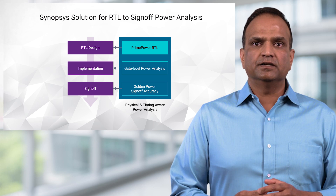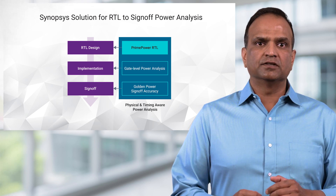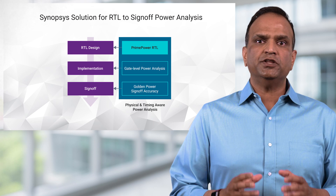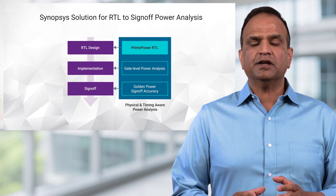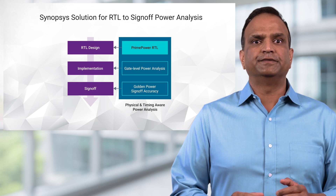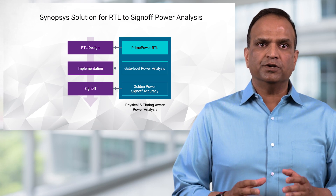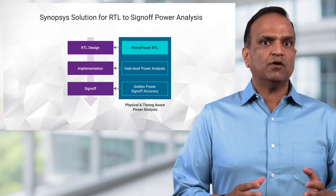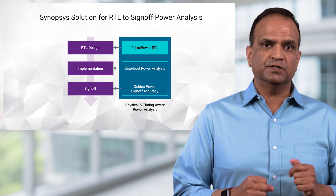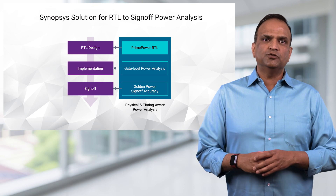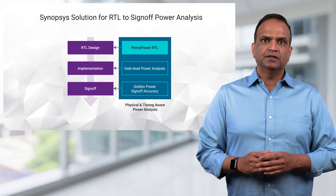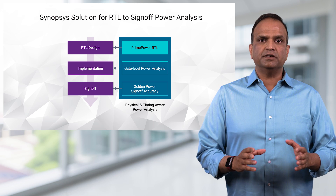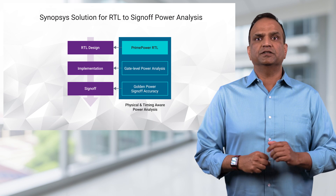Synopsys Prime Power RTL addresses these key requirements with a physical and timing-aware RTL power analysis solution built on key technologies from RTL Architect, Prime Time, and Prime Power. It has the unique ability to accurately predict glitch power and identify sources of glitch in RTL, something that was not possible until much later stages of the design. In contrast to previous generations of RTL power tools, it delivers out-of-the-box power accuracy without the need for manual tweaks and actionable guidance to RTL designers.